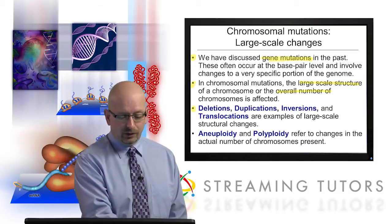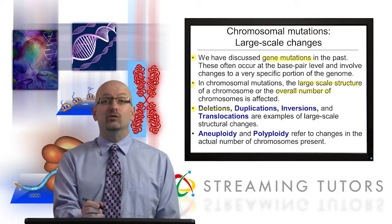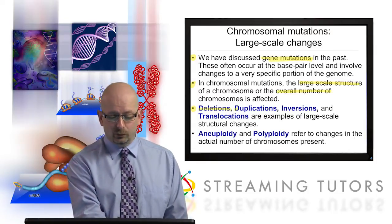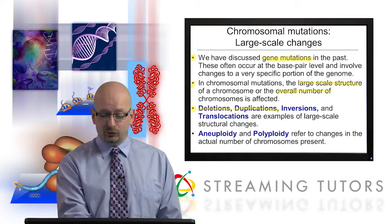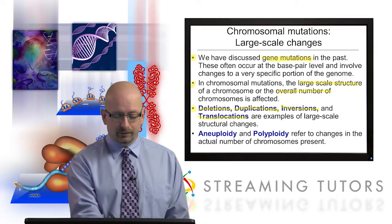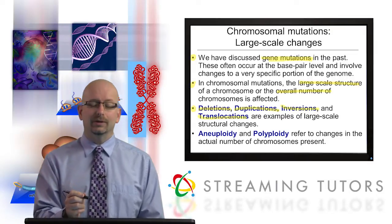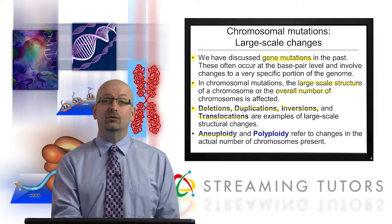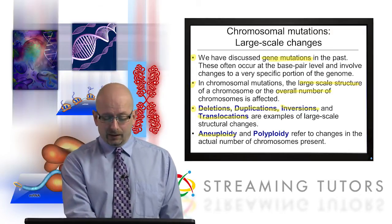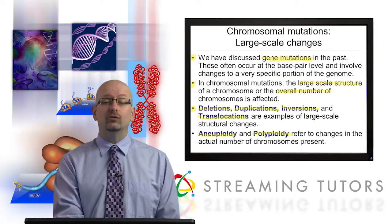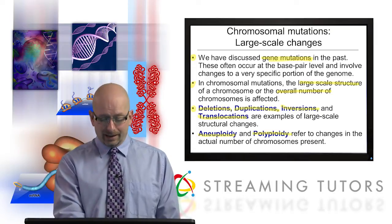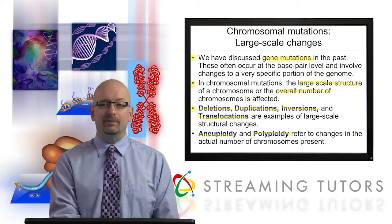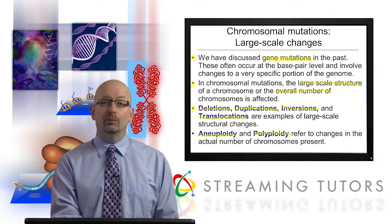Today in this session, we're going to talk about the four major types of chromosomal rearrangements, which are deletions, duplications, inversions, and translocations. Then we're going to have a session on aneuploidy, which refers to a change in the overall chromosome number, and polyploidy, which refers to a different type of change in the overall chromosome number.